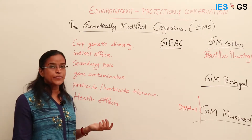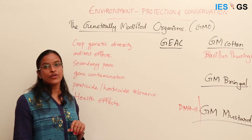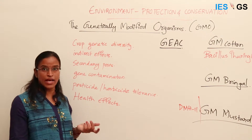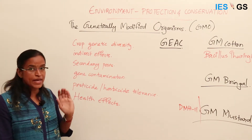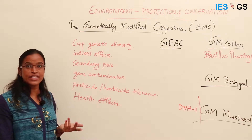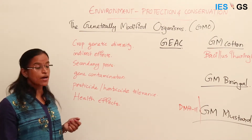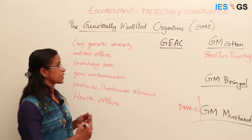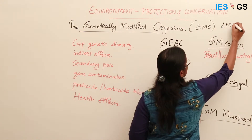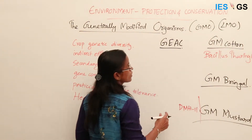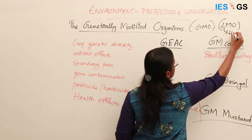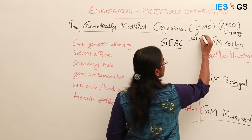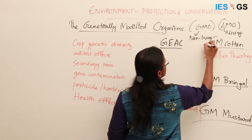Genetically modified organisms can be either plants or animals. Man is artificially modifying the gene structure of such organisms. In international efforts, there is an attempt to prevent the spread of LMOs — Living Modified Organisms. LMO refers specifically to living organisms, whereas GMOs can include either non-living or living organisms.